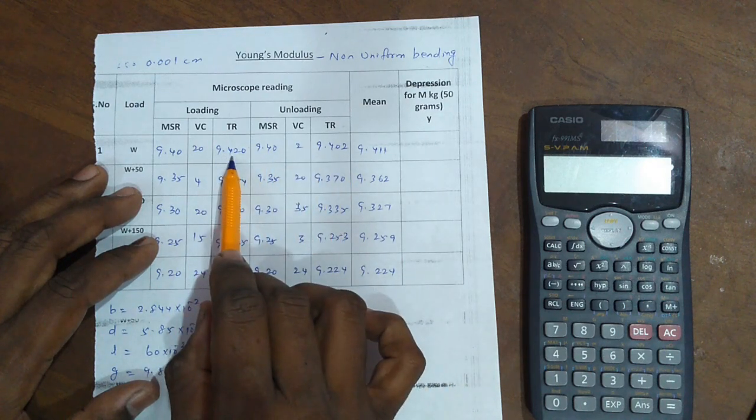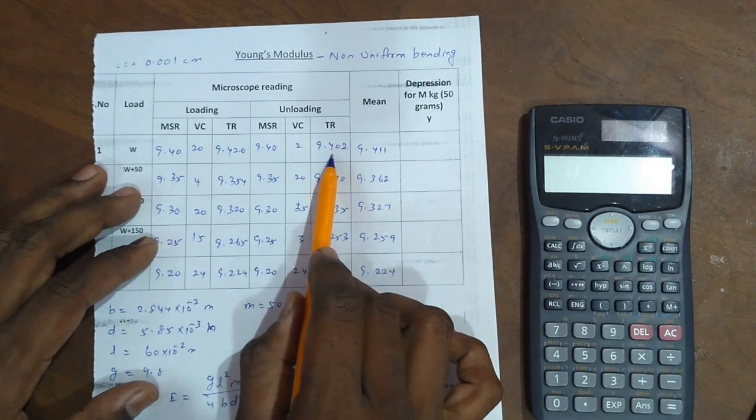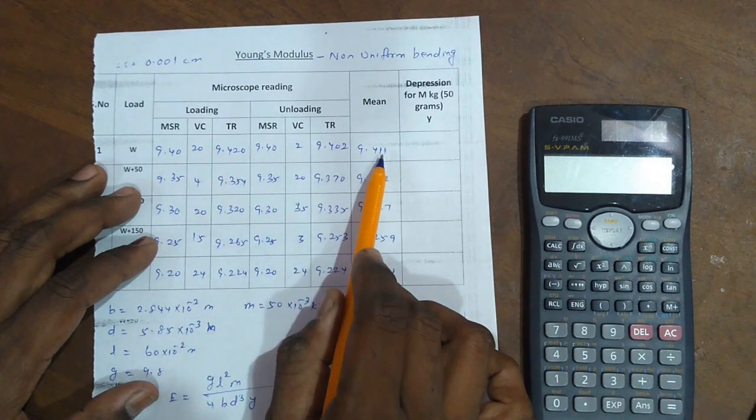Loading total readings plus unloading total readings divided by 2 gives the mean values.